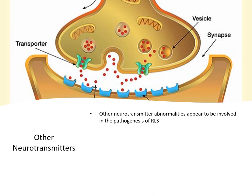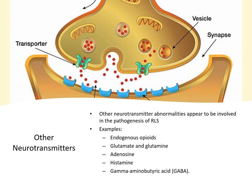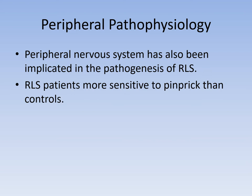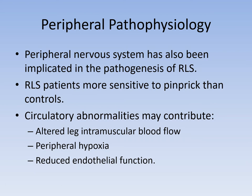Other neurotransmitter abnormalities appear to be involved in the pathogenesis of restless leg syndrome, including endogenous opioids, glutamate, glutamine, adenosine, histamine, and gamma-aminobutyric acid (GABA). Not only does the central nervous system appear to play a role, but so does the peripheral nervous system. Restless leg syndrome patients are more sensitive to pinprick than controls, and circulatory abnormalities such as altered leg intramuscular blood flow, peripheral hypoxia, or reduced endothelial function may also be involved.